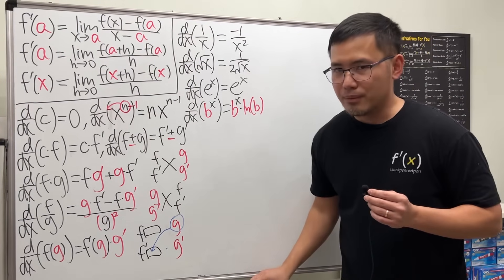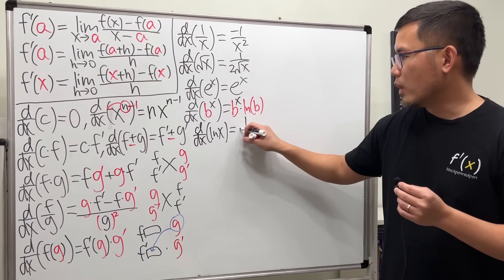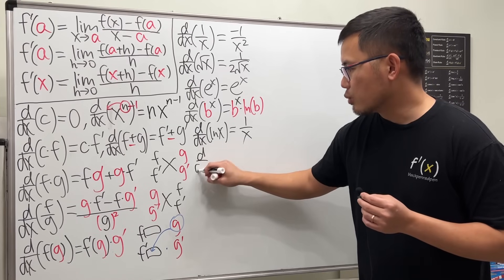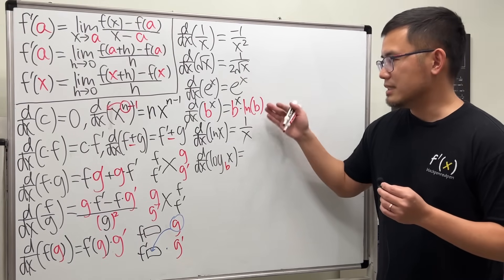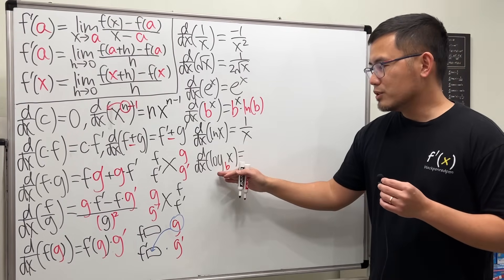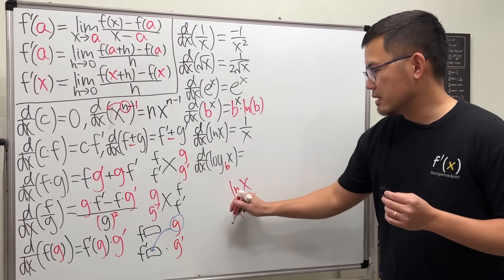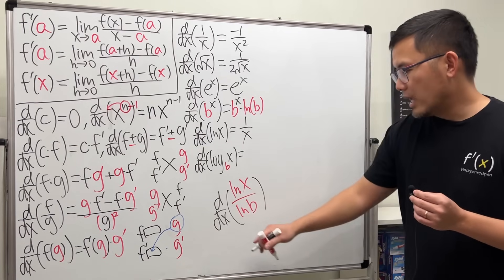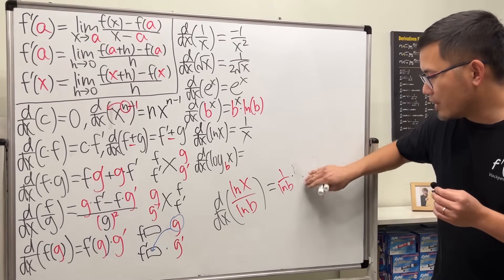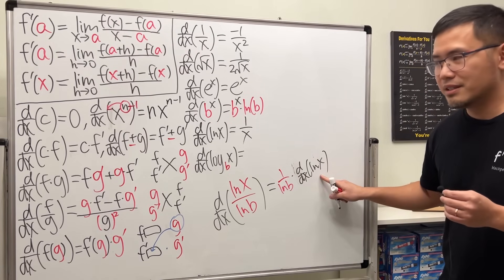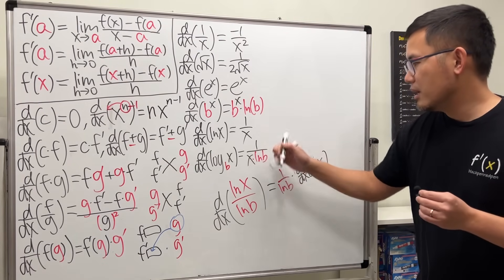The inverse of the exponential: the derivative of the natural log ln(x) is 1 over x. For the general case, the derivative of log base b of x: use the change-of-base formula to write it as ln(x) over ln(b). Pull the constant 1 over ln(b) to the front, then differentiate ln(x) — which is 1 over x — giving the result: 1 over (x times ln(b)).